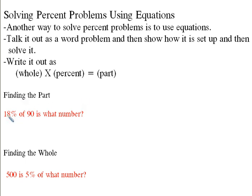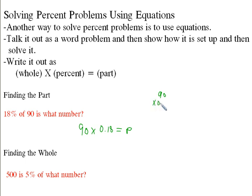Finding the part — a couple of examples here. 18% of 90 is what number? So 90 is the whole. So 90 times 18%, which is just 0.18, is equal to the part. Just make sure not to mix up the part with the percent — keep track of that. So 90 times 0.18: that gives us 720 and then 900, so it's going to be 1620. Our decimal goes there, so the value of the part is going to be 16.2.